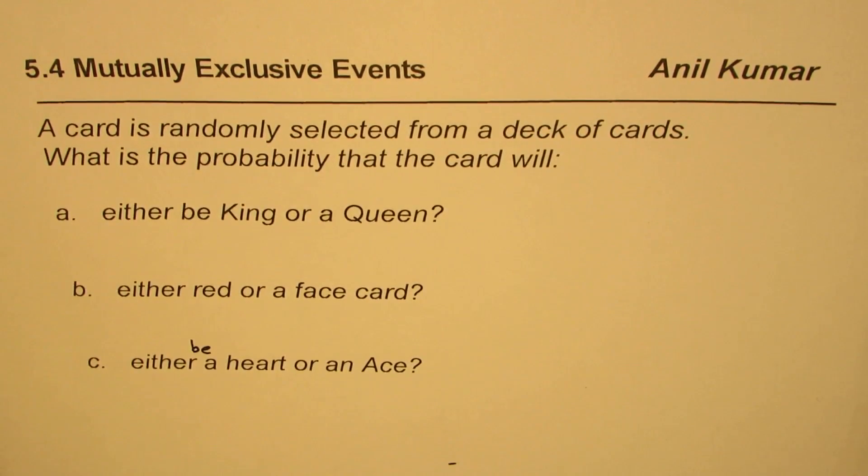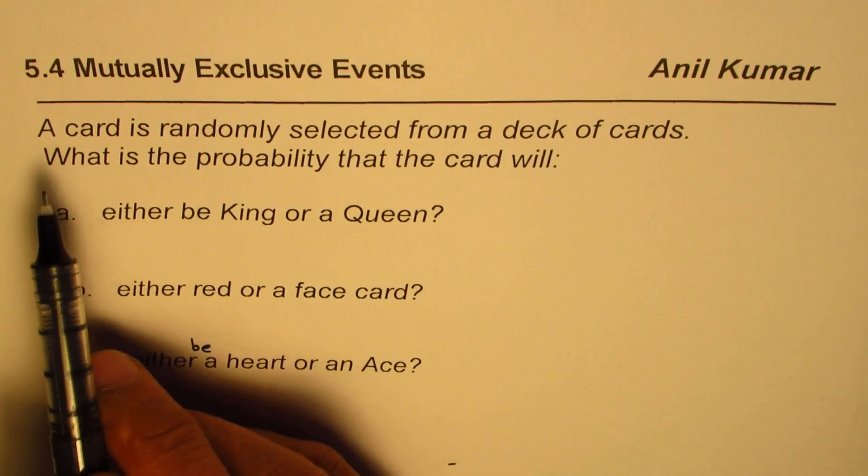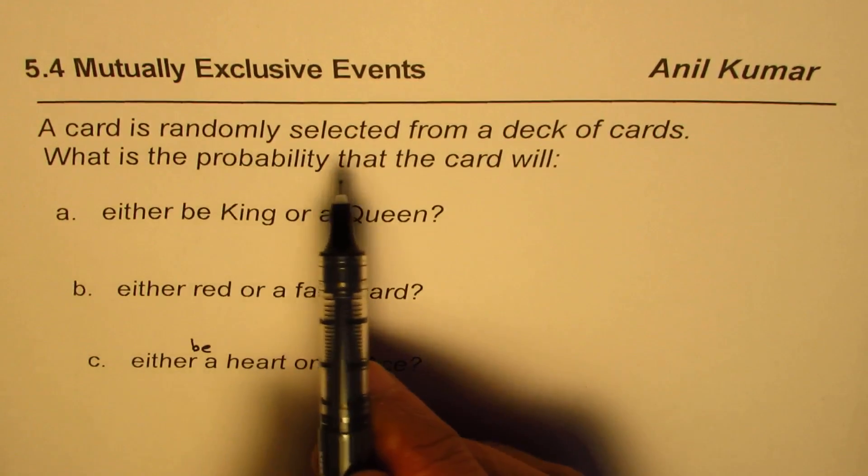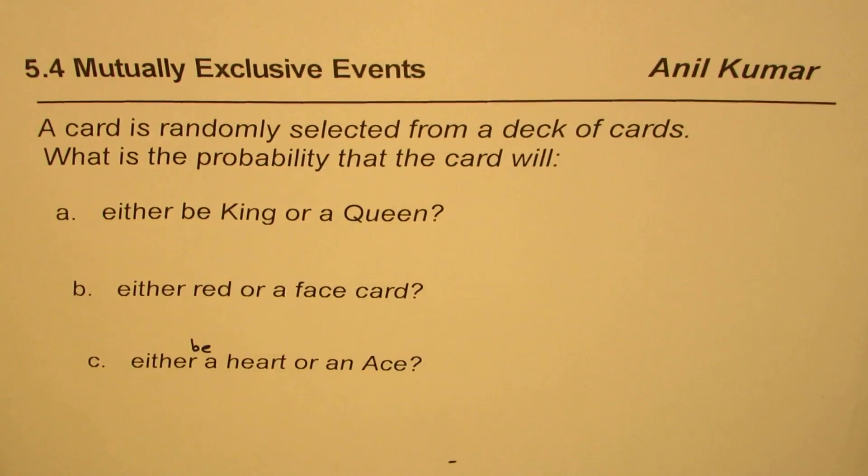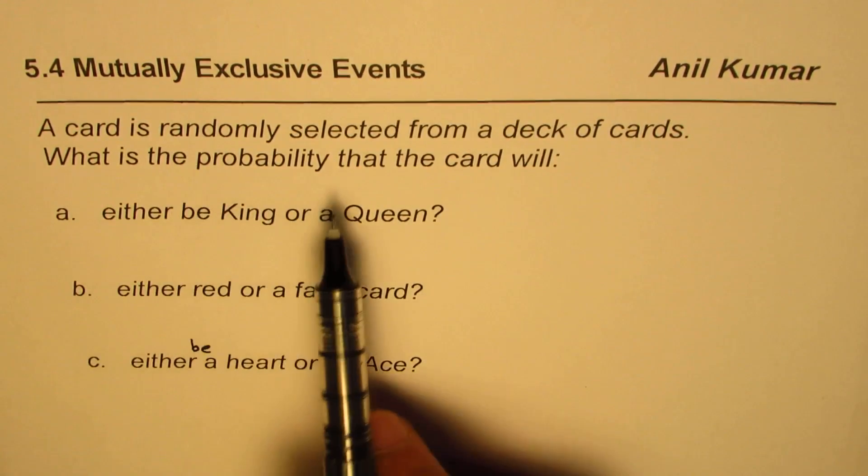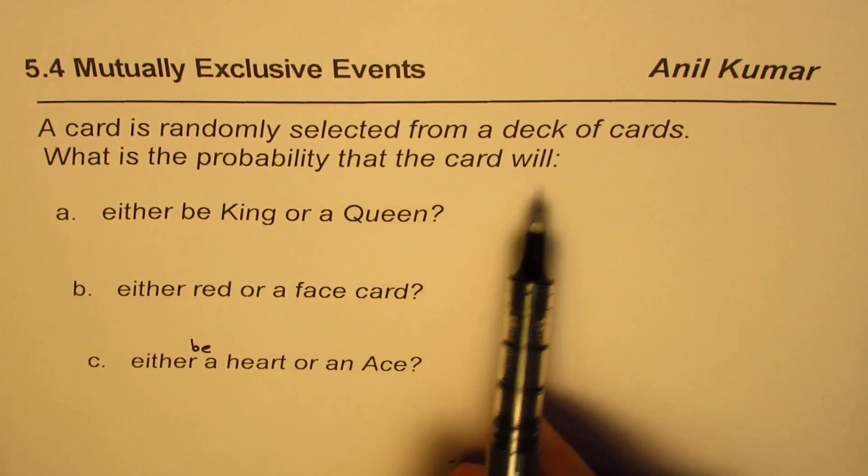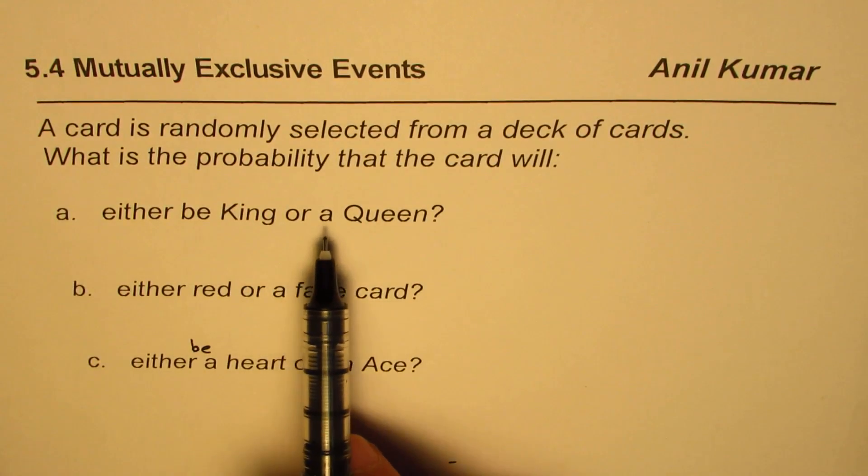I'm Anil Kumar, and to understand the concept of mutually exclusive events and finding probability, I have taken up an example. The question here is: a card is randomly selected from a standard deck of cards which has 52 cards. What is the probability that the card will either be a king or a queen?